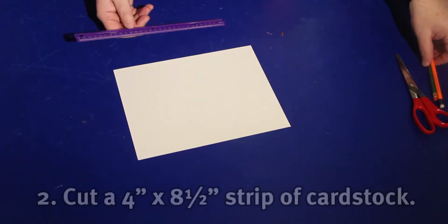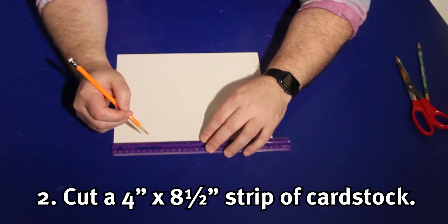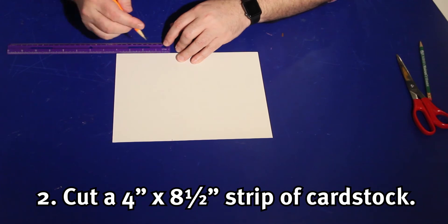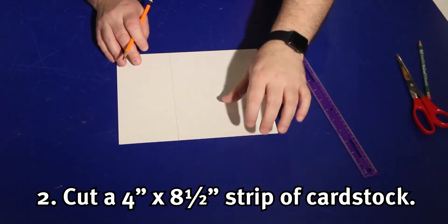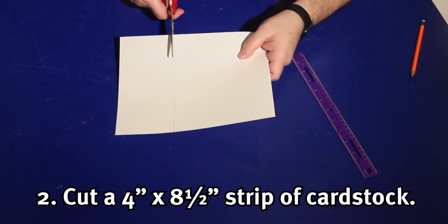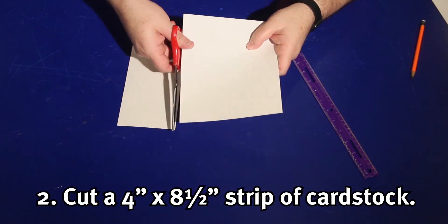I'm going to show you one of the most basic types of pop-up folds, the V-Fold. For this example, I'm going to use a 4 inch by 8 and a half inch strip of cardstock, but the V-Fold can be any size. As you practice your paper engineering and start creating artwork for them, you can design your own V-Fold sizes.